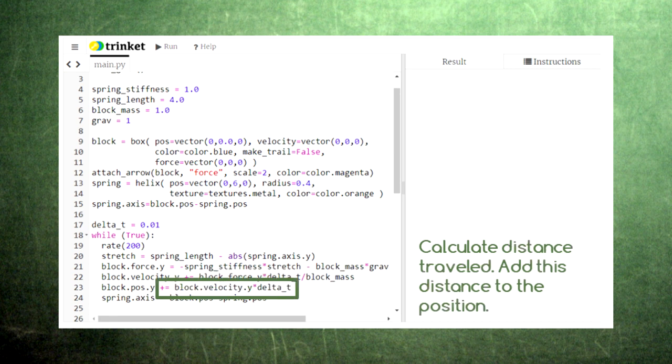Lastly, we calculate the distance that the block will move by in this same small amount of time using the equation distance equals velocity times time and add this distance to the block's position. Sometimes this addition will move the block upwards, and sometimes it will move the block downwards.